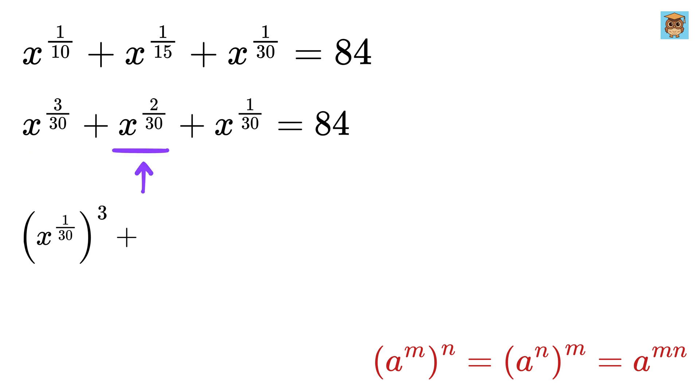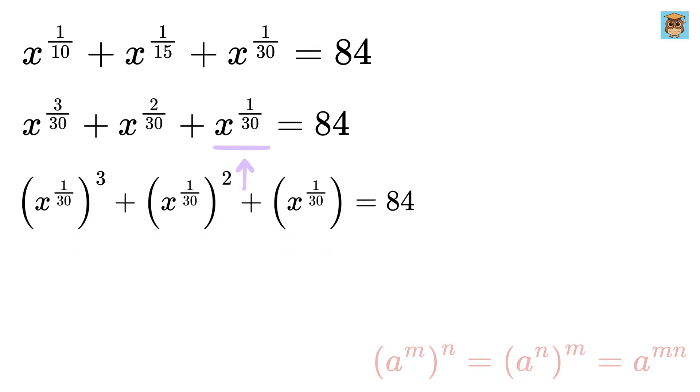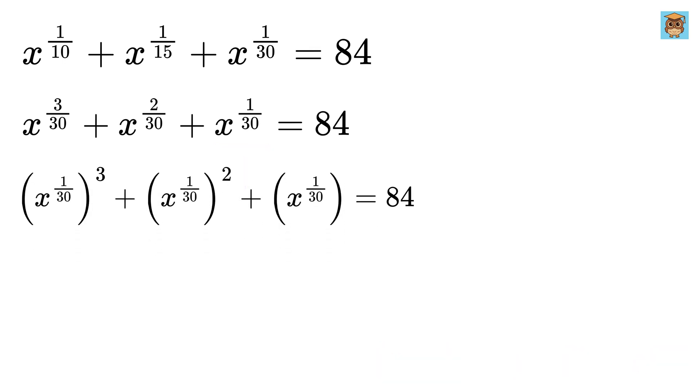Similarly, x raised to 2 over 30 can be rewritten as x raised to 1 over 30 whole squared, and x raised to 1 over 30 remains the same. Now let's introduce a new variable to make things simpler. Let's say y is equal to x raised to 1 over 30. This means we can replace x raised to 1 over 30 with y. Substituting this into our equation, we get y raised to 3 plus y raised to 2 plus y equals 84.